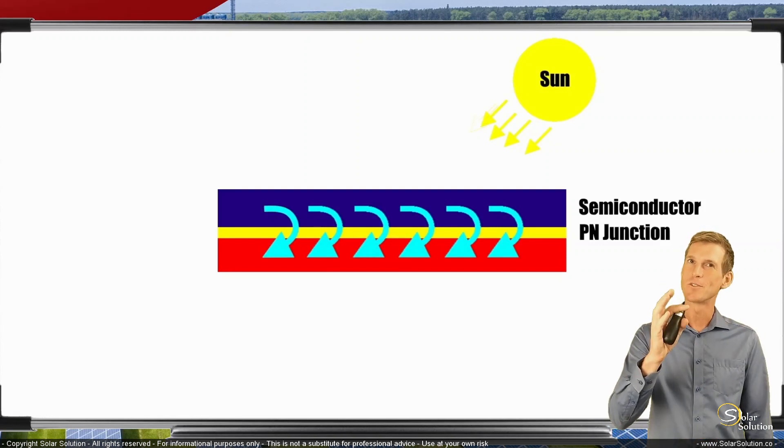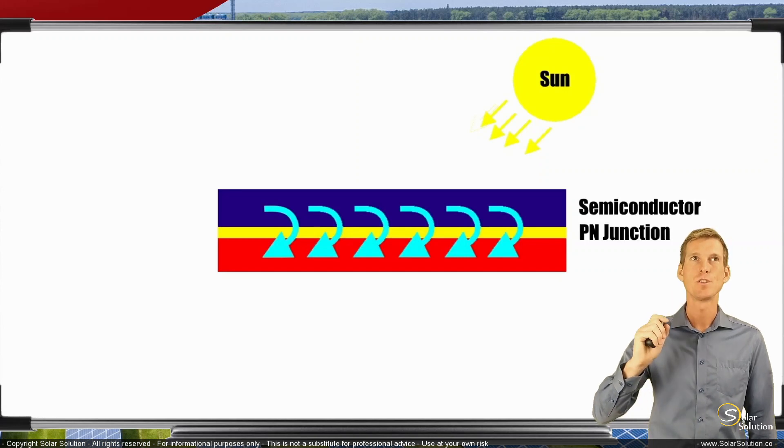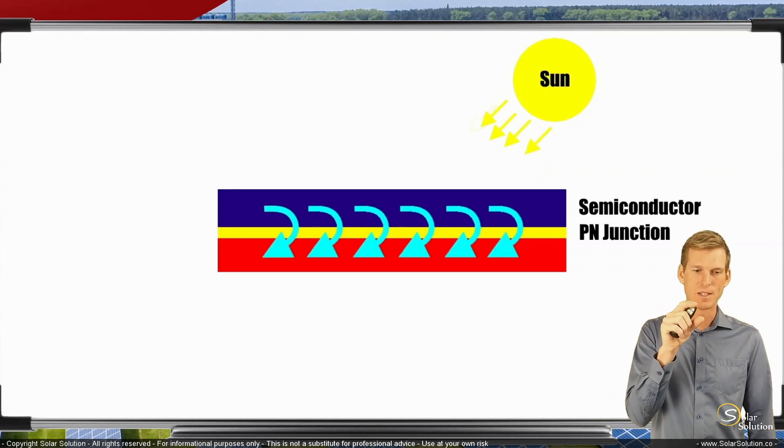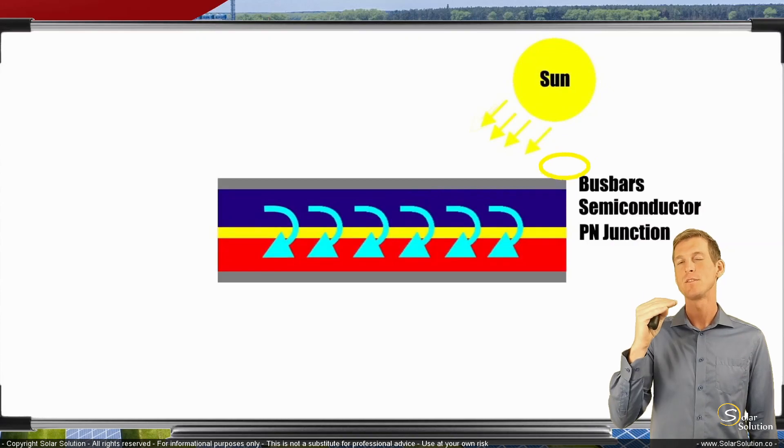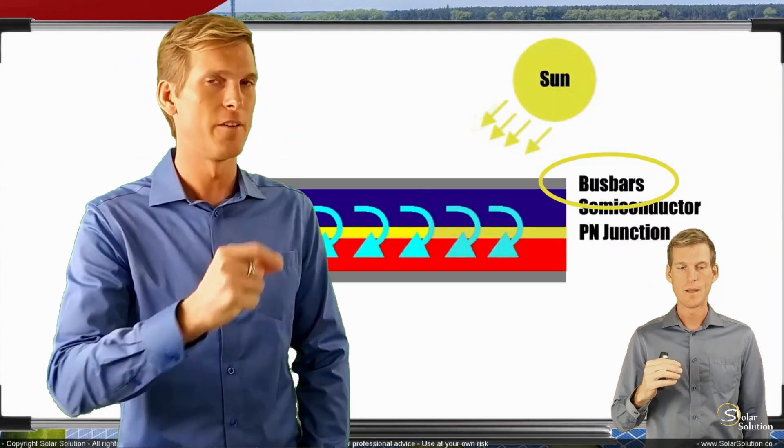Then, to use the electricity being created over the P-N junction, we connect bus bars. We install bus bars on both the positive and negative side of the semiconductor.